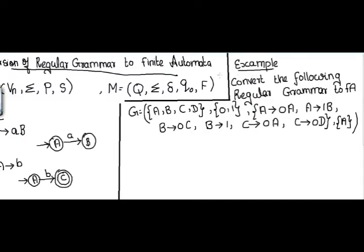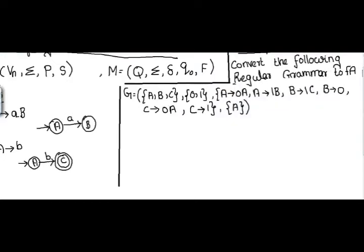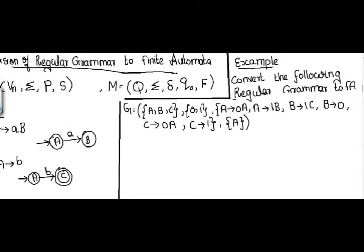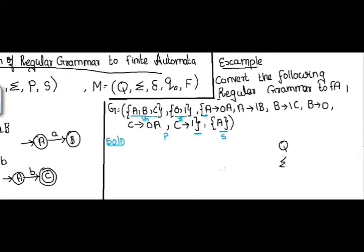Now I'll explain with one example. The grammar G is given: the non-terminals V are {A, B, C}, sigma is the set of input symbols, and the set of production rules and start symbol are also given. To convert to finite automata, I write the five tuples: Q (states), sigma (input symbols), the transition function, the initial state q0, and F (final state). Sigma is {0, 1} and the states include A, B, C, and possibly one more.